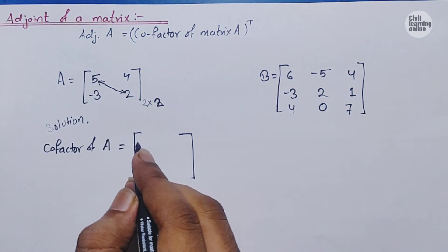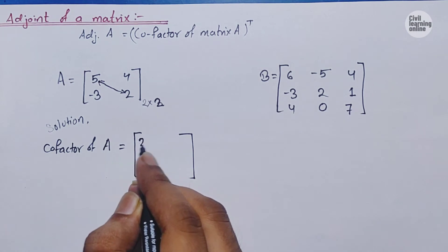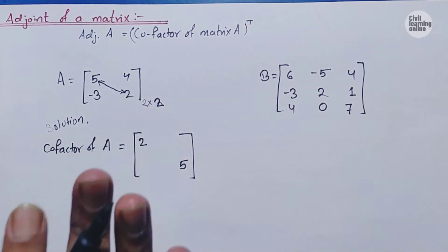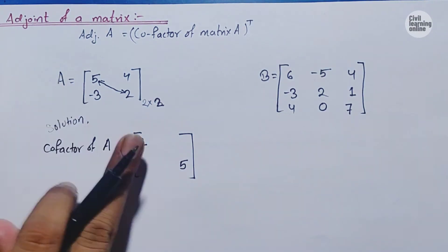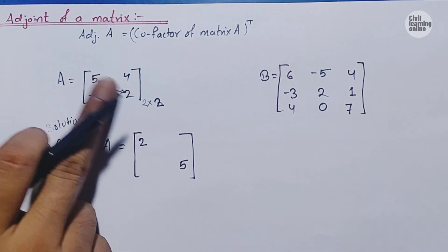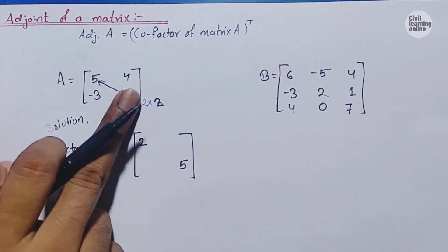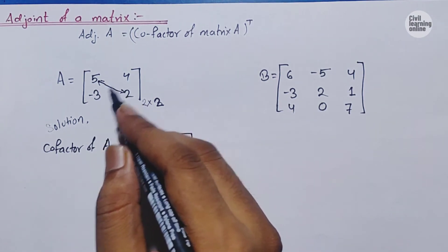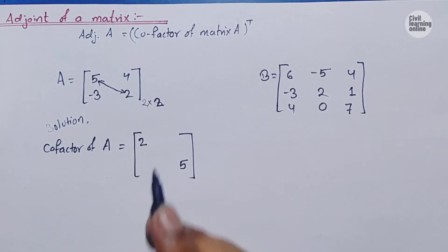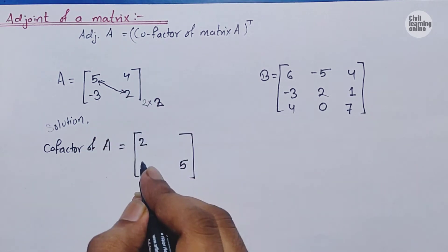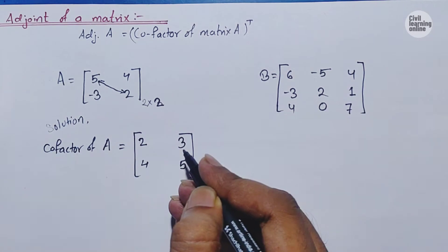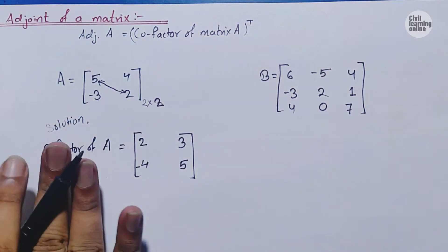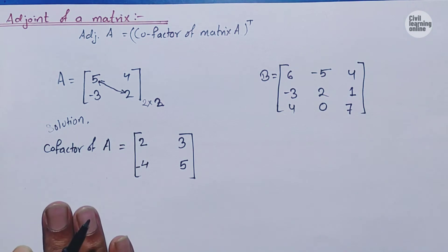In place of 5 we will place 2, and in place of 2 we will place 5. For the diagonal from left to right we simply change positions only. But when changing the elements of the other diagonal — from bottom to top — we need to change the sign as well as the position. So 4 will occupy this position and -3 will occupy this position. Our -3 becomes positive and our 4 becomes negative. We have now calculated the cofactor of matrix A.